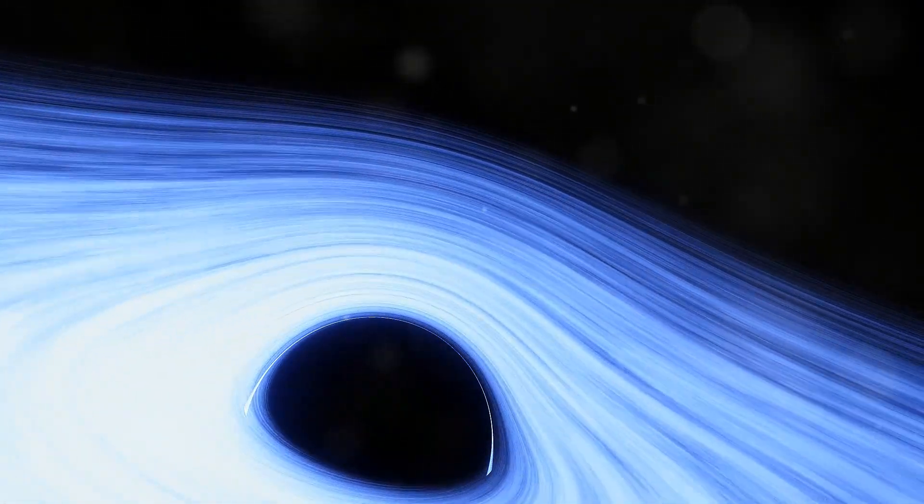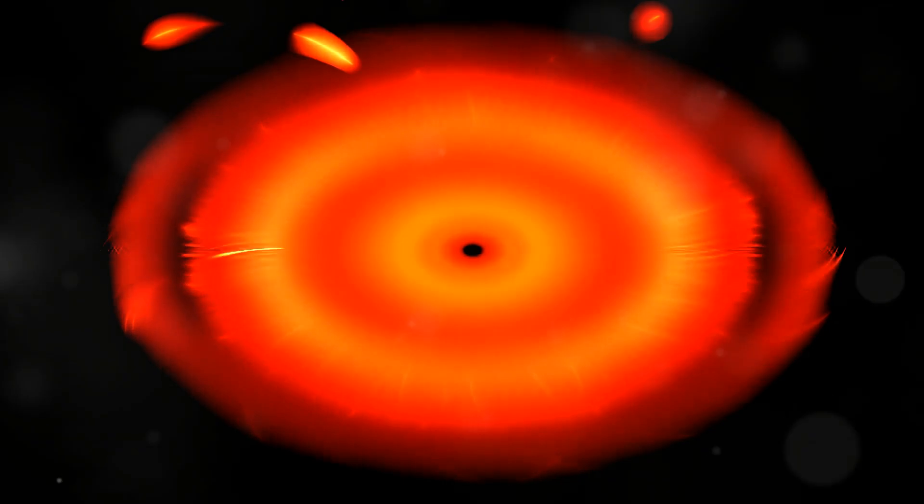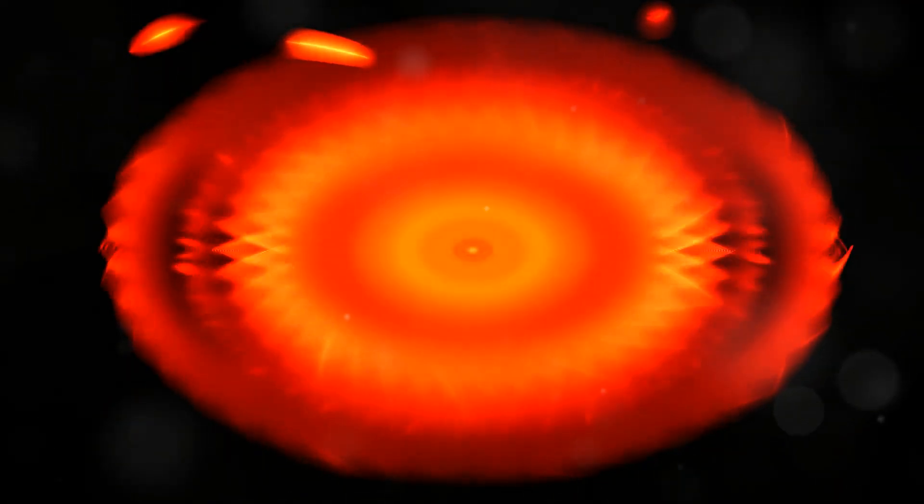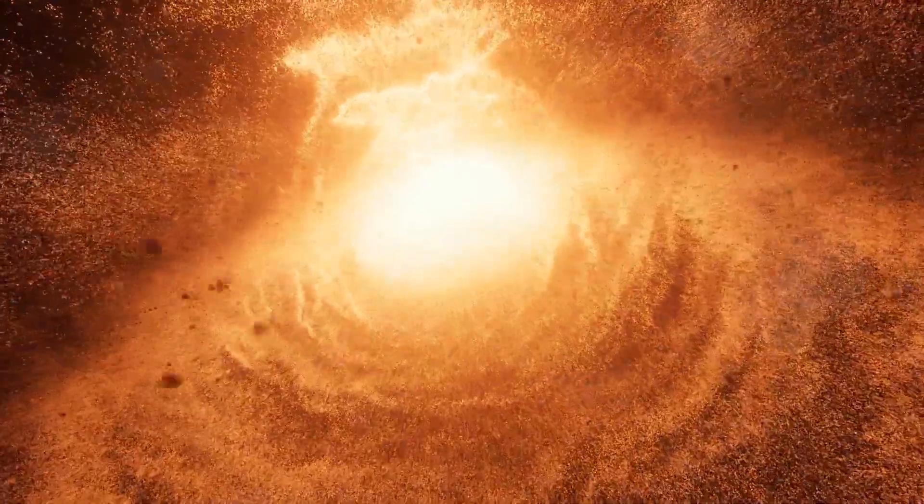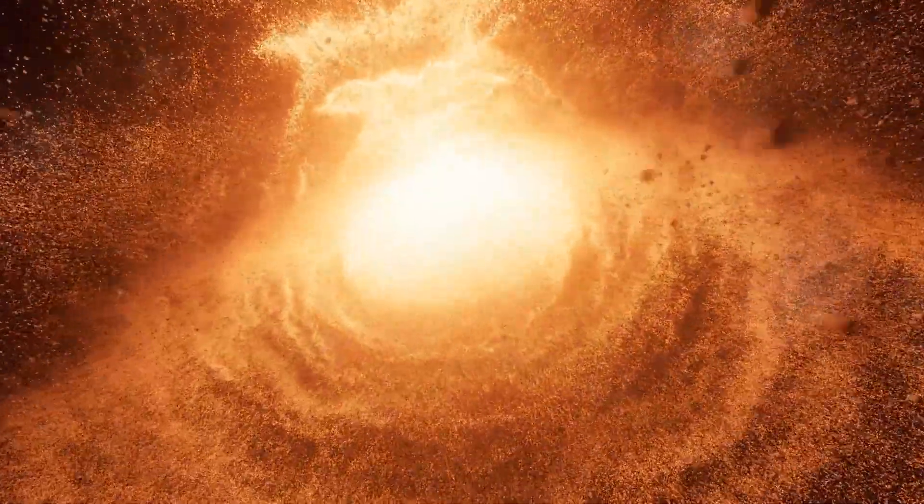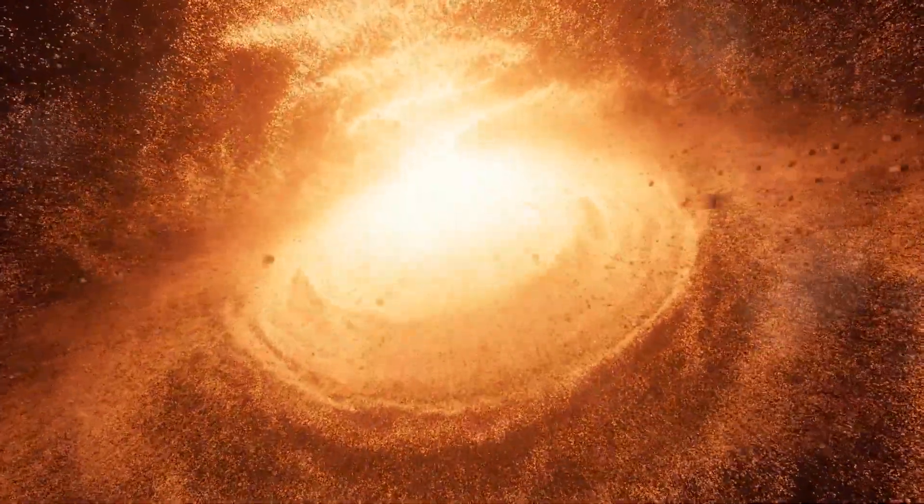As matter falls towards a black hole, it spirals inward, forming a swirling disk of gas and dust called an accretion disk. Friction within the accretion disk heats the material to extremely high temperatures, causing it to emit intense radiation, including x-rays. This process of accretion is how black holes grow.